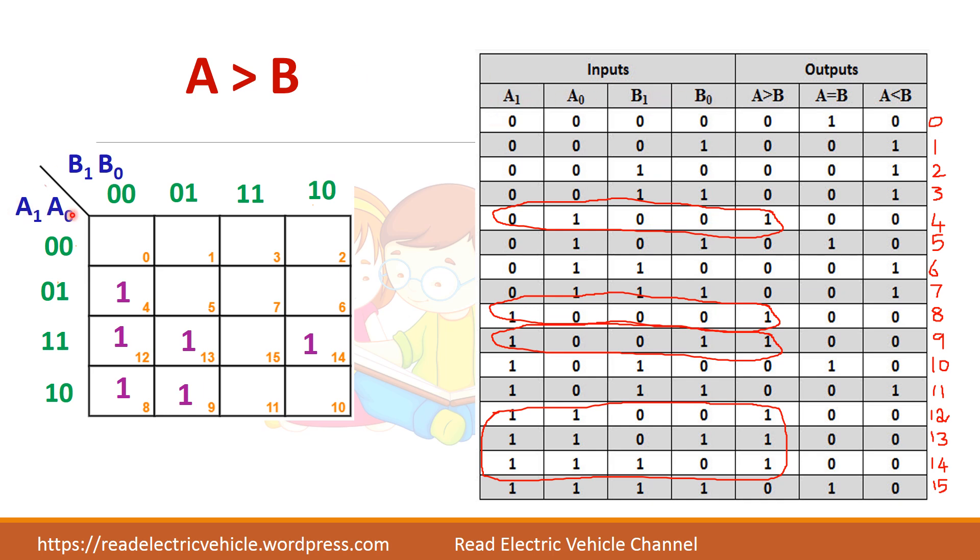So these are the input variables whatever you are writing here. So if you take A, B, C, D here, it should be A, B, C, D.